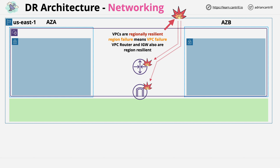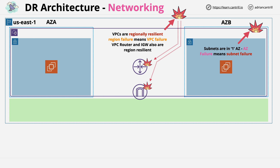Let's say we have EC2 instances in both subnets — the subnet in availability zone A and the subnet in availability zone B. Subnets are tied to the availability zone they're located in, so if the availability zone fails, the subnet also fails. And if a subnet fails, any resources located in that subnet also fail.